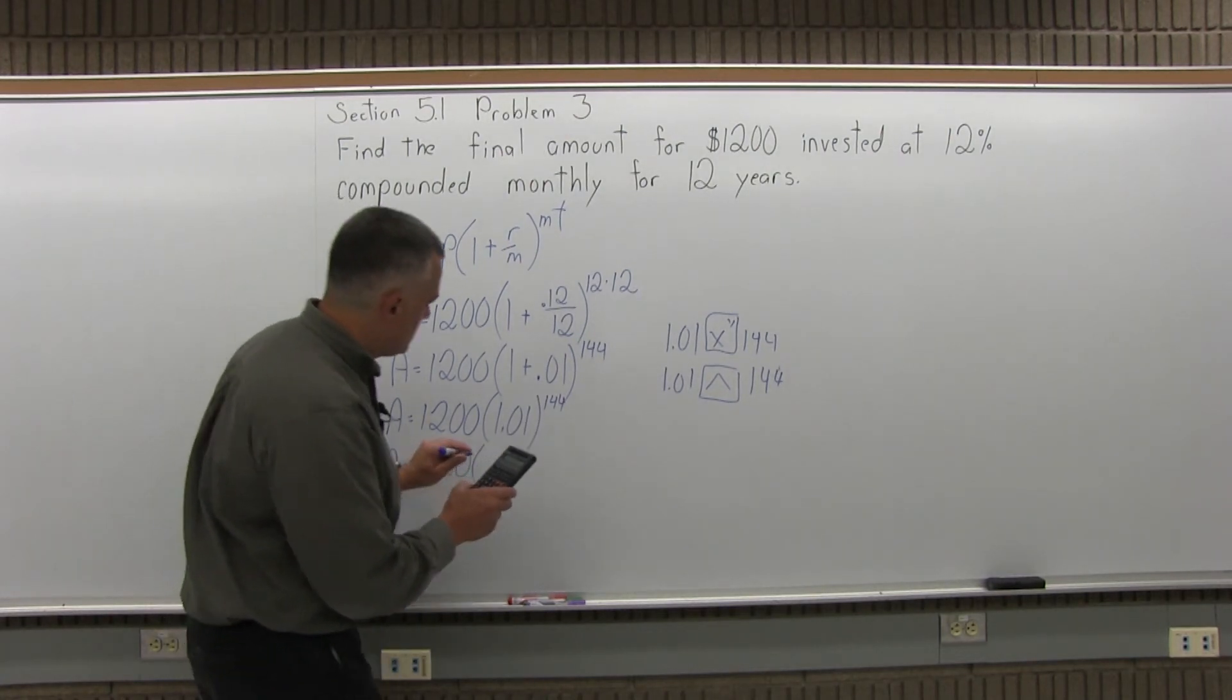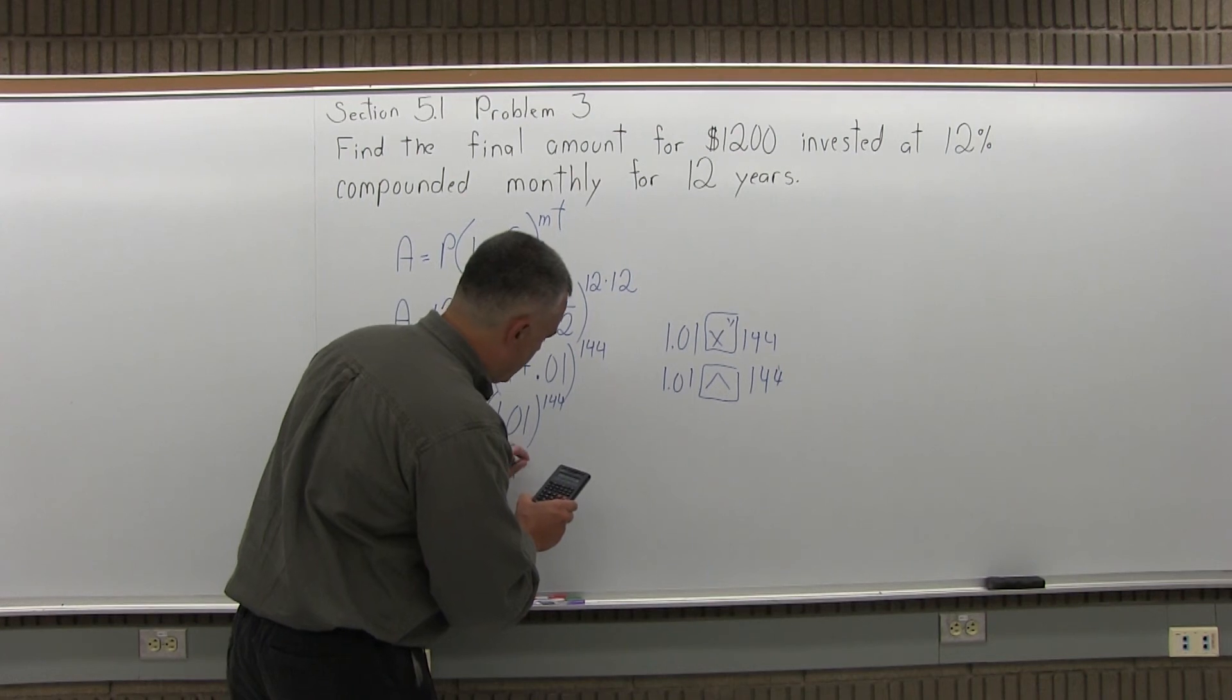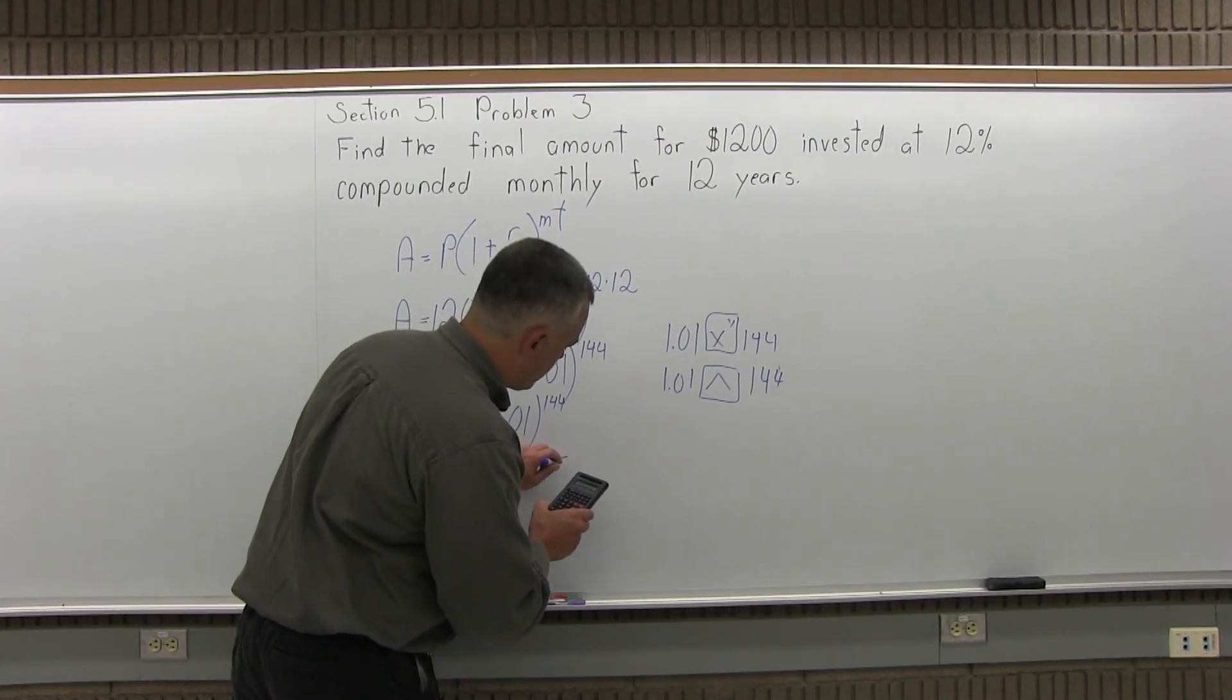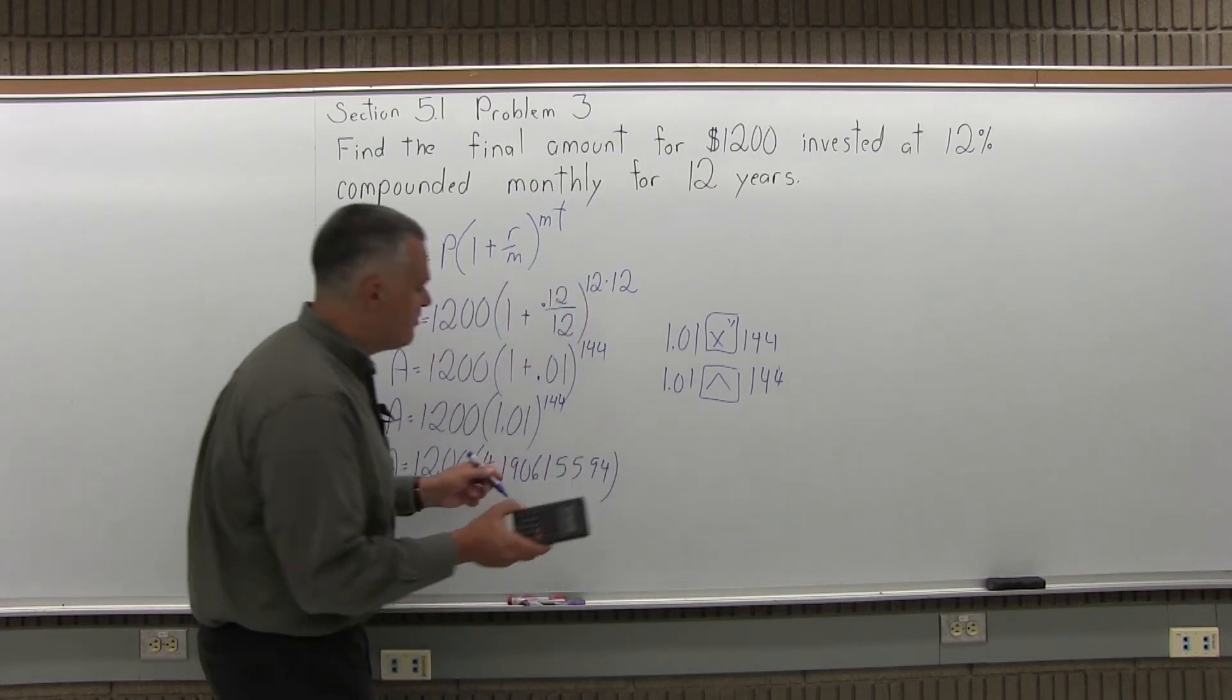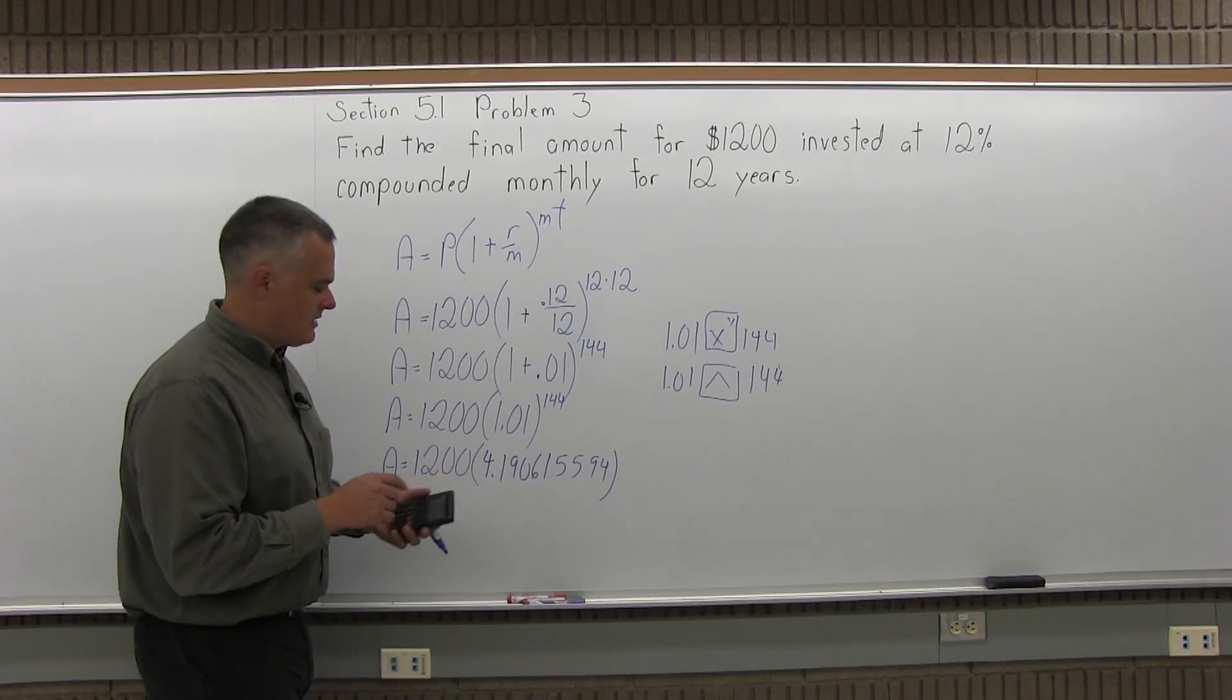So I'm going to enter 1.01 exponent button 144 equals, and the answer is 4.190615594. I'll keep all the decimals for now, I'll round it in a minute.